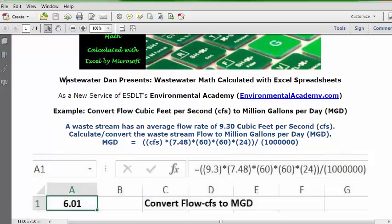And in A1, you see the answer: 6.01 MGD based on this data. So that's the answer to the problem.